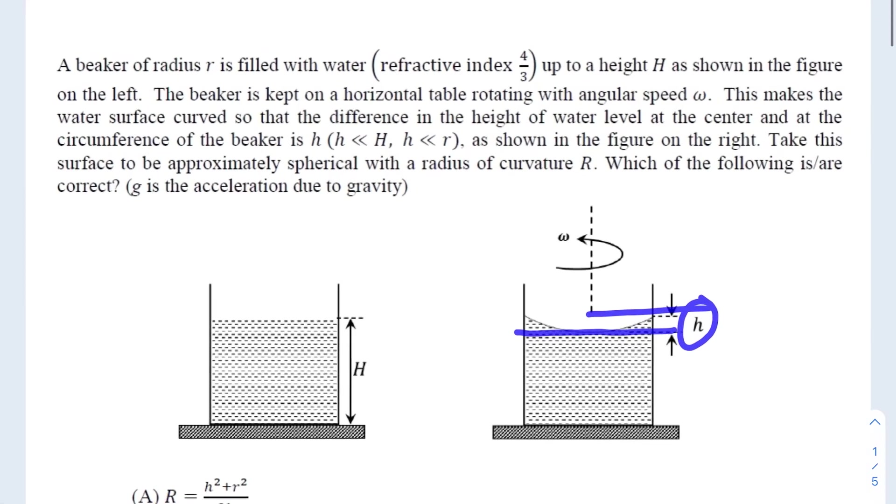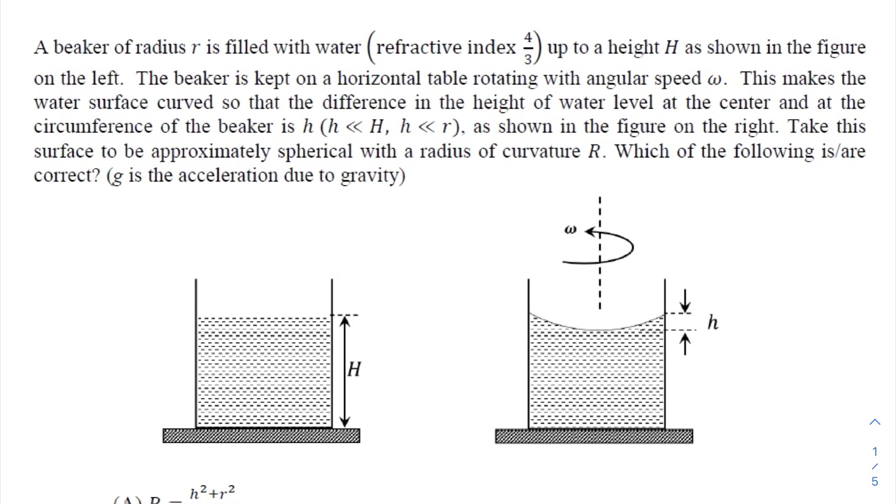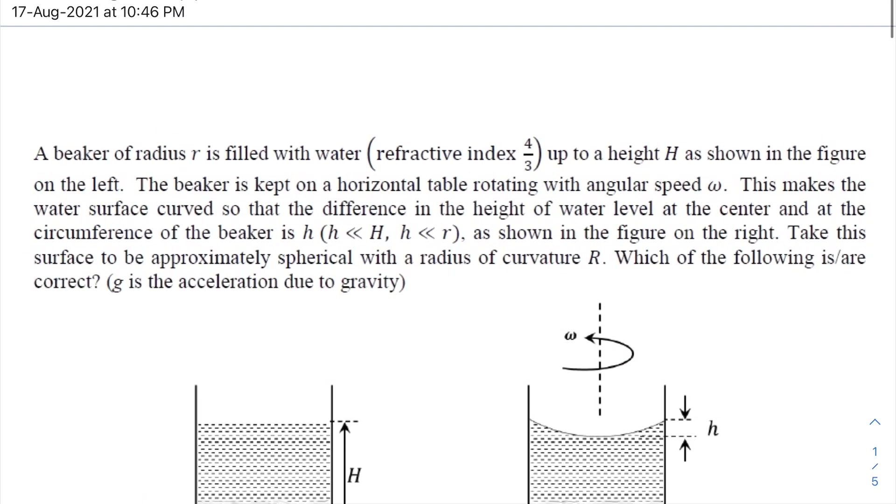Few approximations: small h is very much less than capital H, and small h is very much less than radius. Also, as shown in the figure on the right, take this surface to be approximately spherical with radius of curvature R. Point to be noted here: which of the following is or are correct?